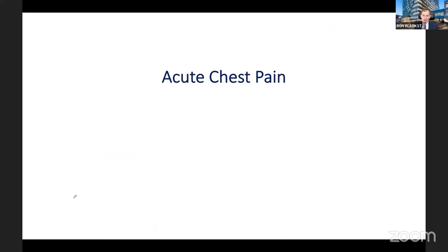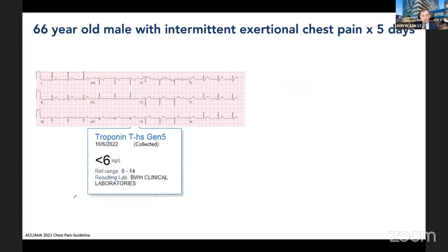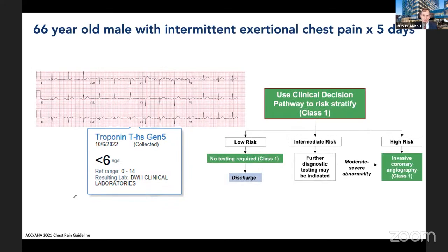Regarding acute chest pain: here is a case of a 66-year-old male with intermittent exertional chest discomfort for five days presenting to the ER. We now use high-sensitivity troponin, which has a Class I indication in the guideline but is still not widely used in the U.S. The guideline uses clinical decision pathways that integrate clinical data and troponin to categorize patients as low, intermediate, or high risk. Low-risk patients need no testing; high-risk go to the cath lab; intermediate-risk patients need more testing.